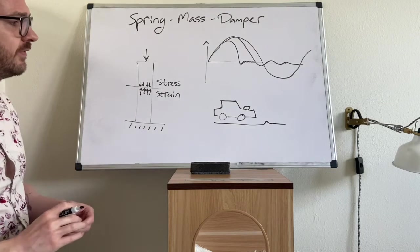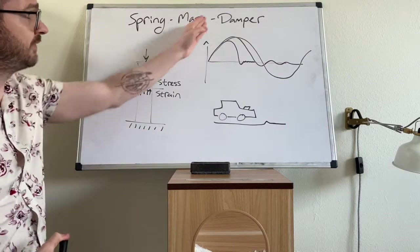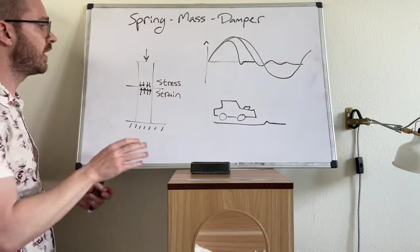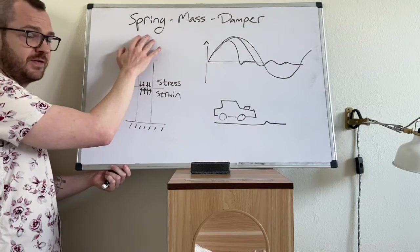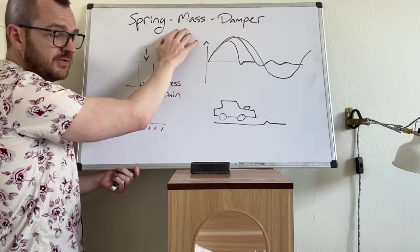There are all kinds of different responses that your spring mass damper could have and the nature of this response comes from the relative values of the stiffness, the damping coefficient, and the mass that is attached to it.